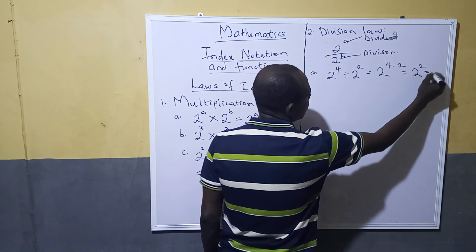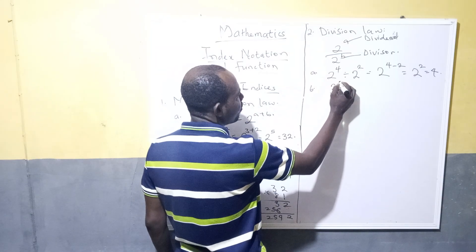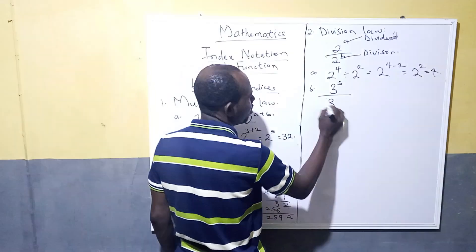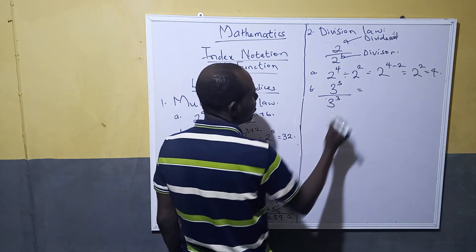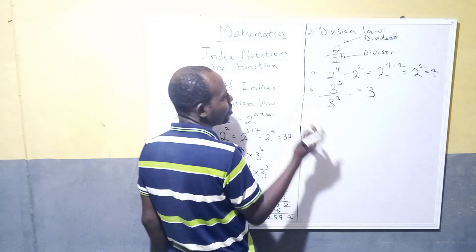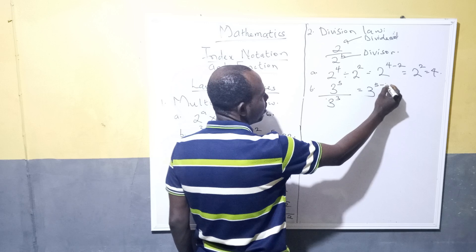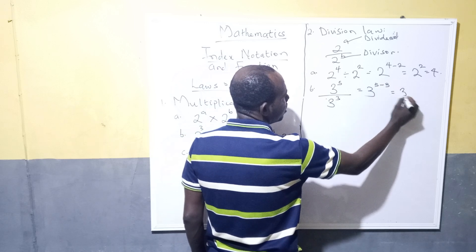Another example is when we have 3 raised to the power of 5 divided by 3 raised to the power of 3. Remember, we take one of the bases, 3, then we subtract our divisor from our dividend, which is 5 minus 3, and we have 3 raised to the power of 2, which equals to 9.